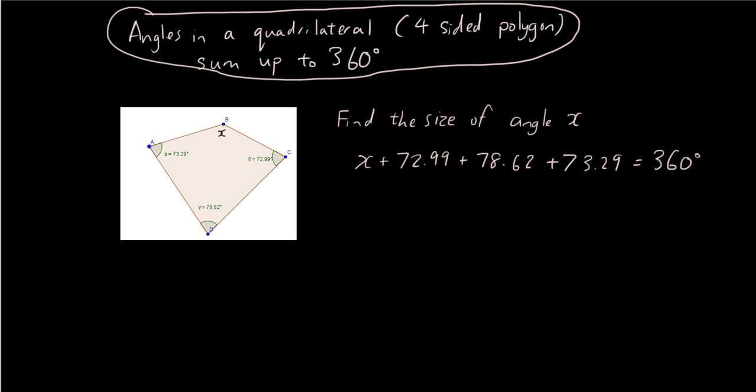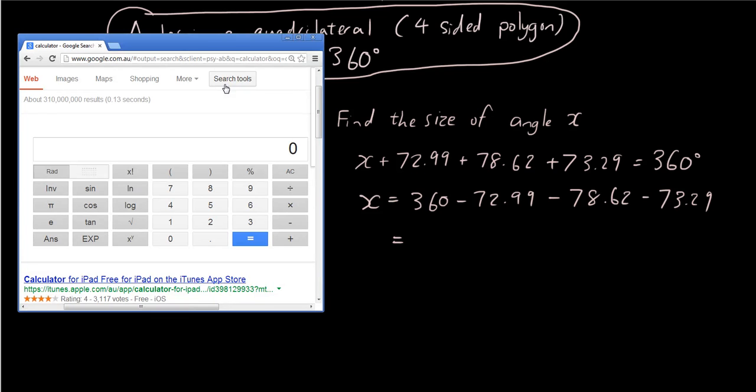So therefore, x must be equal to 360 minus 72.99 minus 78.62 minus 73.29. And putting all that in the calculator. So I have 360 minus 72.99 minus 78.62 minus 73.29, and I get 135.1 degrees.